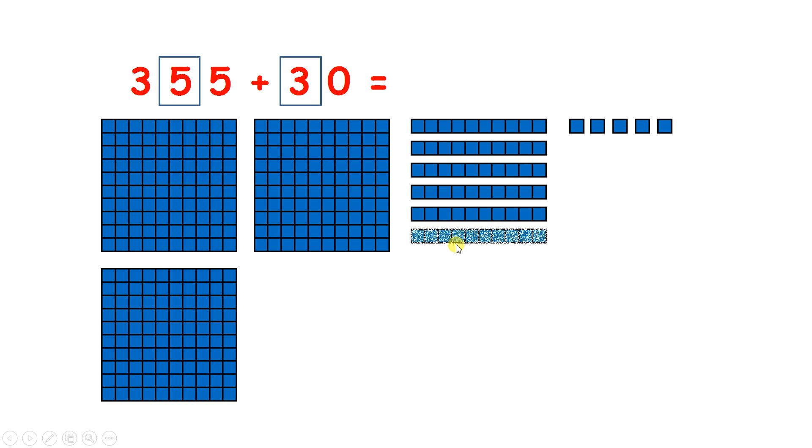So if we add one, two, three tens, we now have eight tens, so we have 385, because five plus three is eight.